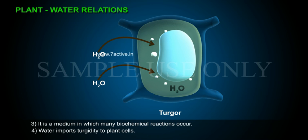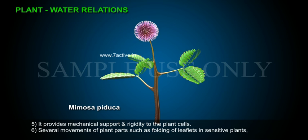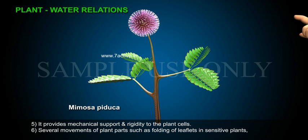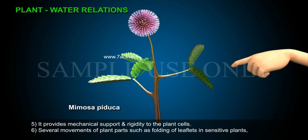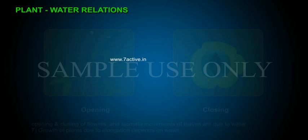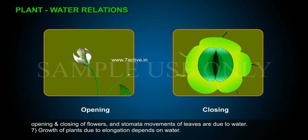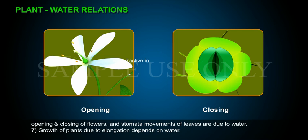Fourth, water imparts turgidity to plant cells. Fifth, it provides mechanical support and rigidity to the plant cells. Sixth, several movements of plant parts — such as folding of leaflets in sensitive plants, opening and closing of flowers, and stomata movements of leaves — are due to water.